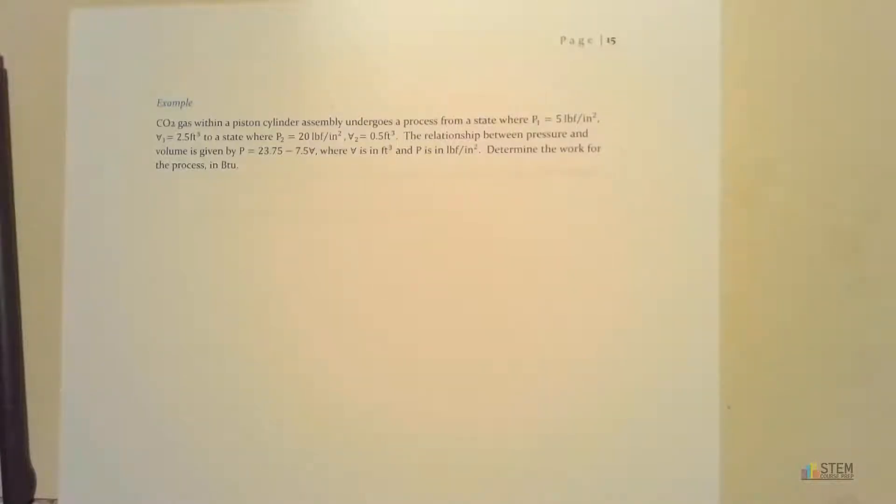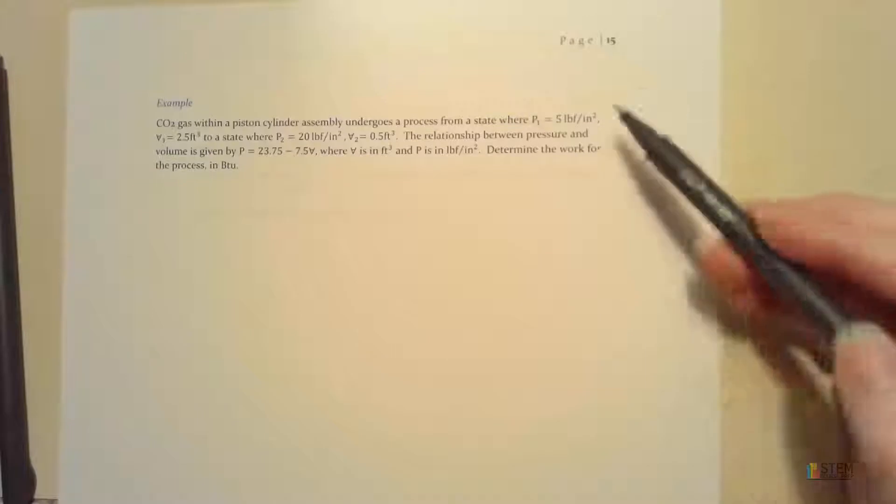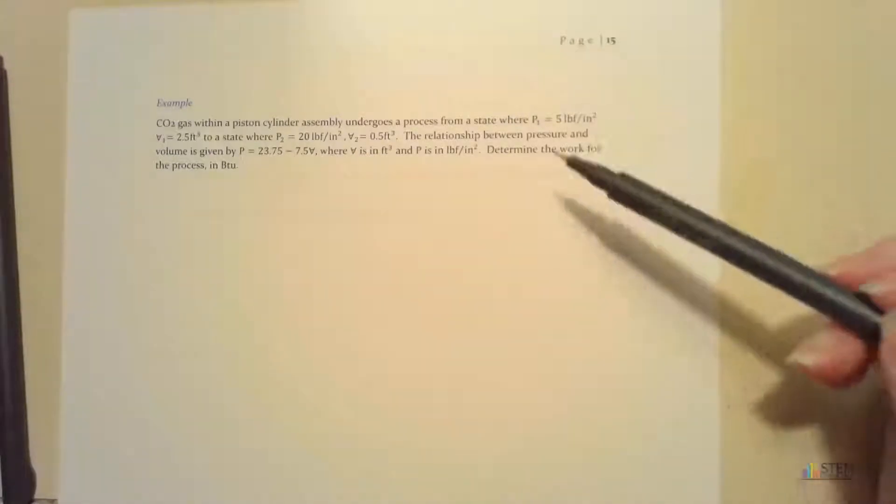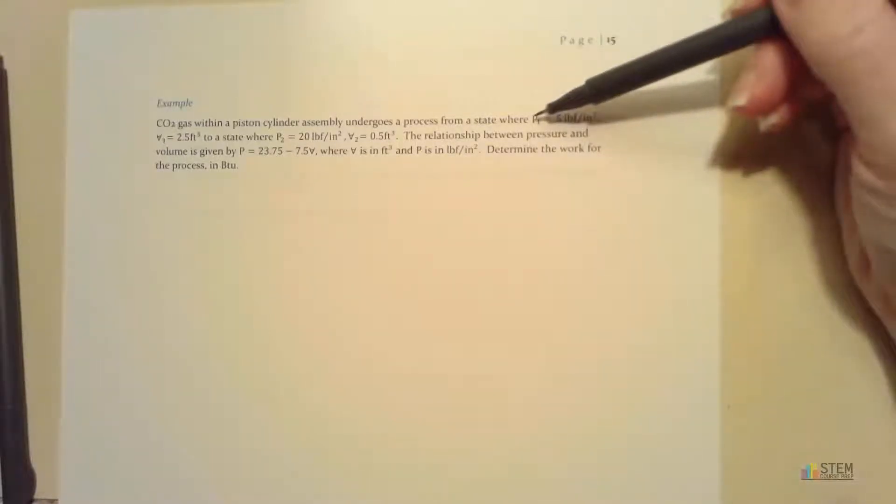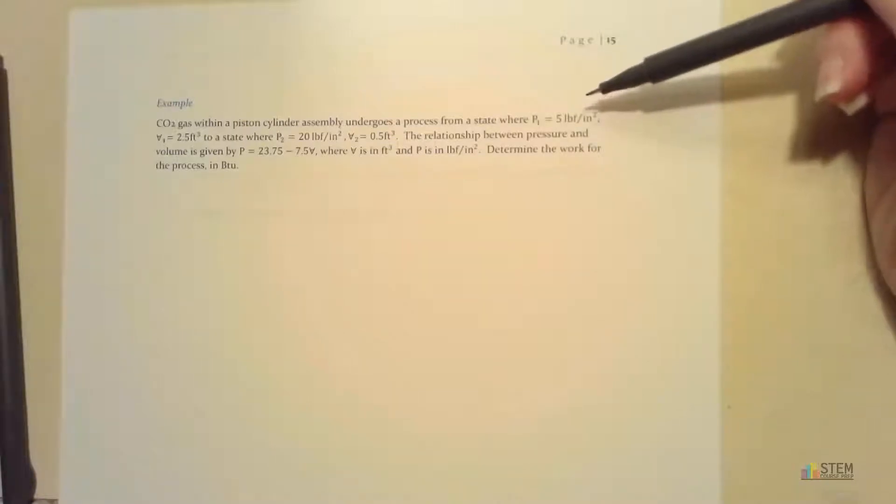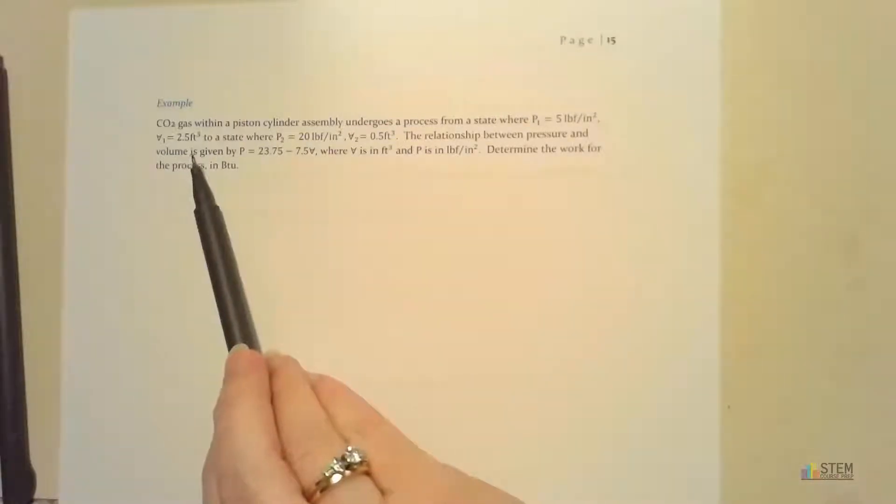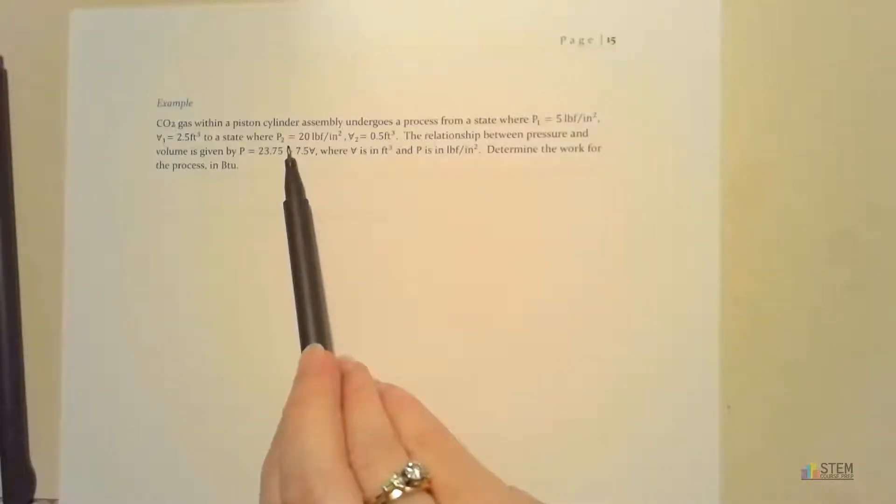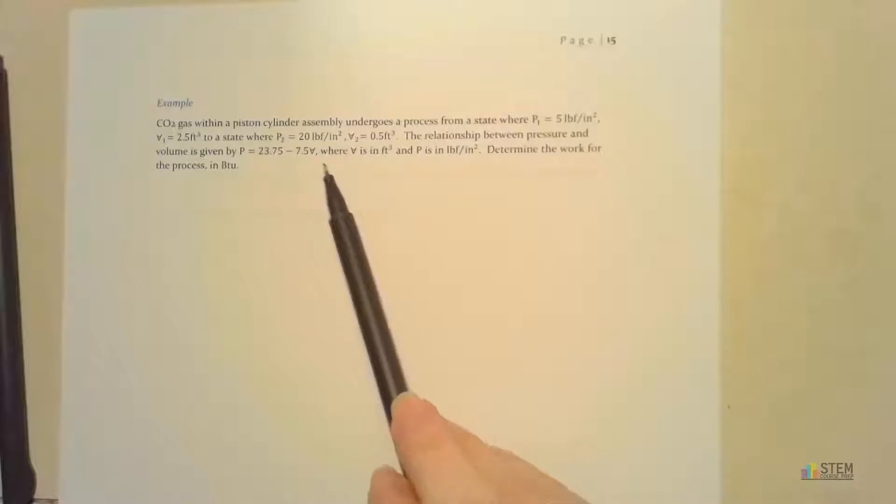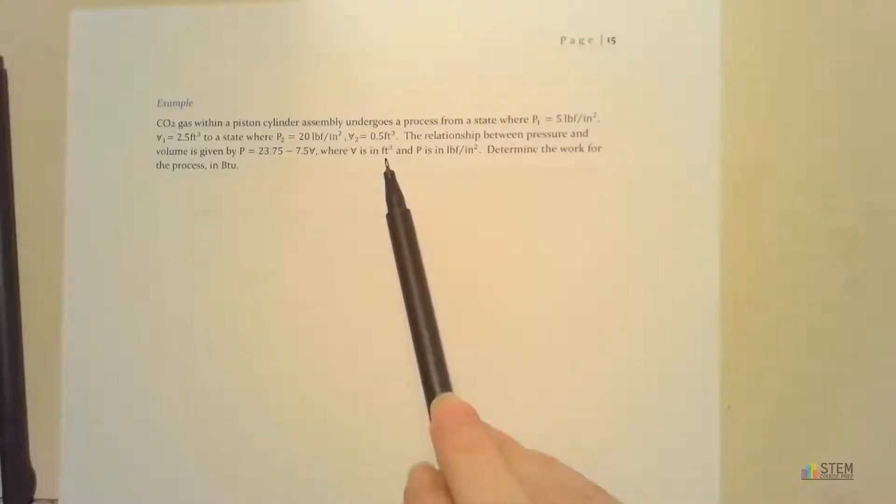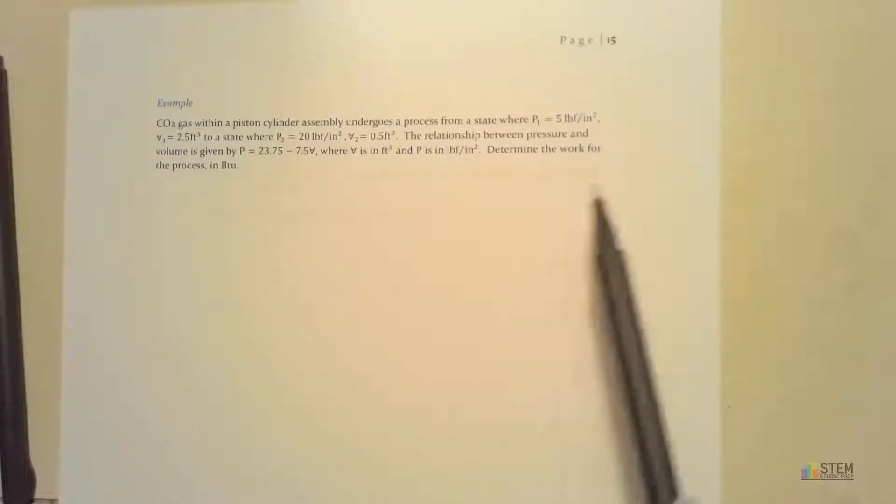We're going to start off with an example for the work section. In this example, we have carbon dioxide gas in a piston-cylinder assembly undergoing a process from an initial state where pressure is 5 psi and volume is 2.5 cubic feet, to a state where pressure is 20 psi and volume is 0.5 cubic feet. The relationship between pressure and volume is given by an expression, and we want to determine the work for the process in British thermal units.